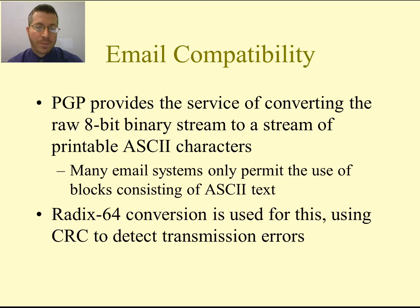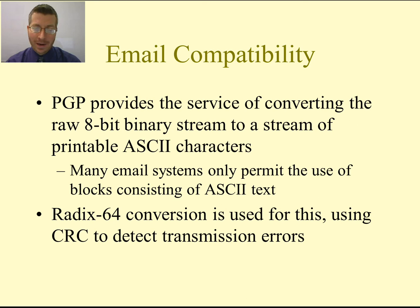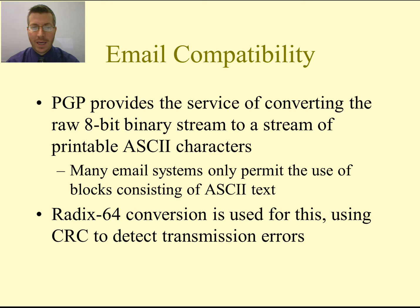The fourth use of PGP is email compatibility. Since PGP is primarily used through email communication, PGP provides the service of converting the raw 8-bit binary stream to a stream of printable ASCII characters. When we're encrypting, zipping, and hashing, we're dealing with raw 8-bit binary values — not ASCII characters. Most email systems need the text as ASCII instead of a raw binary stream. RADIX64 is the algorithm used for converting between this binary stream and ASCII characters. PGP also adds CRC — the cyclic redundancy check — to detect transmission errors.